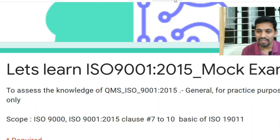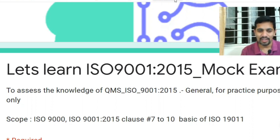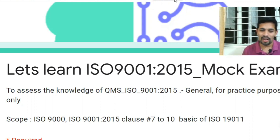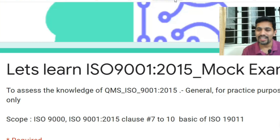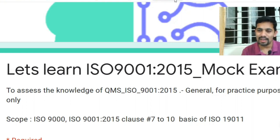These questions are very fundamental and basic to quality management system and ISO 9001:2015. The scope we're going to cover is ISO 9001:2015, particularly Clause 7 (Support) all the way to Clause 10 (Improvement), and the basics of ISO 19011 — that is auditing guidelines for auditing management systems. Please stay tuned till the end.